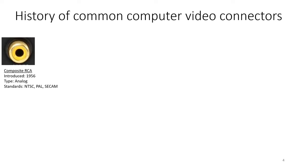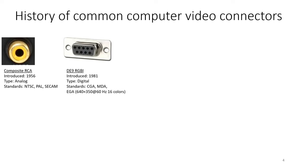I think all of you have seen this - Composite RCA. It's very old, from 1956. It's an analog port and it supports older TV standards like NTSC and PAL. Early PCs used this, followed by the DE9 port introduced in 1981. This is actually a digital port. It supports standards like CGA and MDA, which I'll go through.